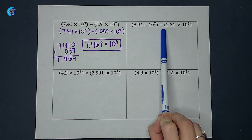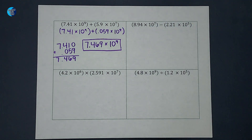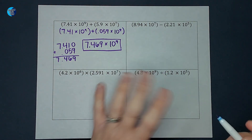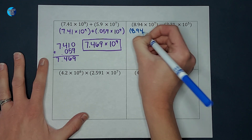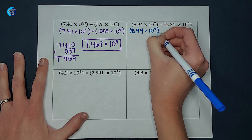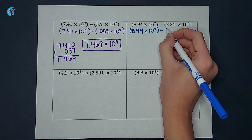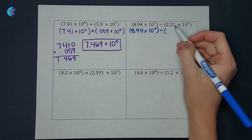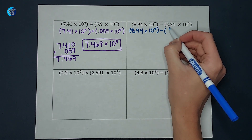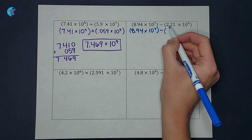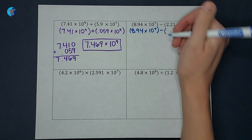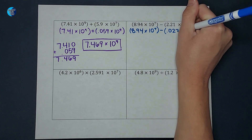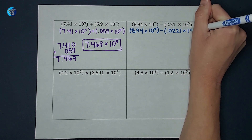When subtracting, the exponents need to be the same — either both 10 to the seventh or both 10 to the fifth. I'm going to change them so they're both 10 to the seventh, which means 8.94 times 10 to the seventh stays as is. For the other number, currently 10 to the fifth, I move the decimal two places left so that to get back to the original number I move it seven times, giving me 0.0221 times 10 to the seventh.